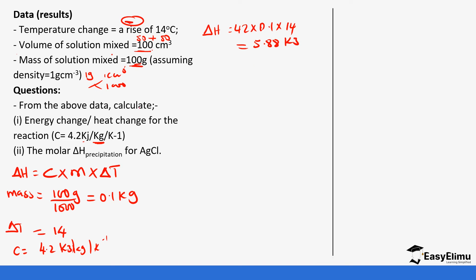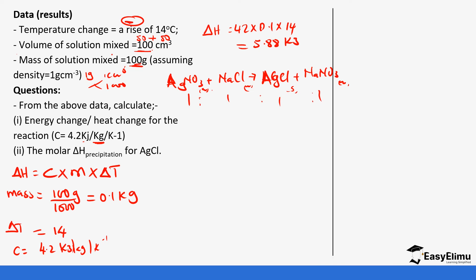The next question is the molar heat of precipitation of silver chloride. When we write the equation it is important to get the moles of each solution to find the moles of the precipitate. The equation is: silver nitrate + sodium chloride → silver chloride + sodium nitrate. The mole ratio is 1:1, so we get the moles of the nitrate and the moles of the chloride to find the moles of silver chloride.